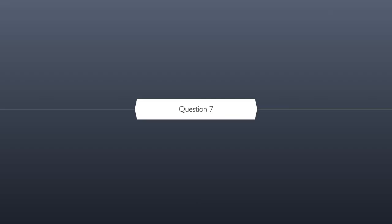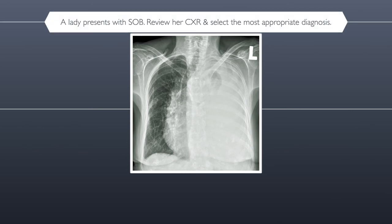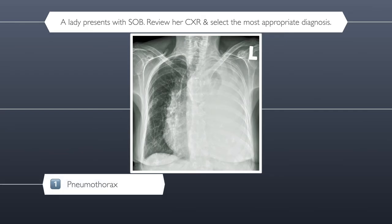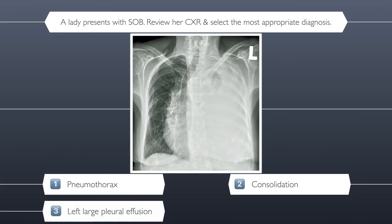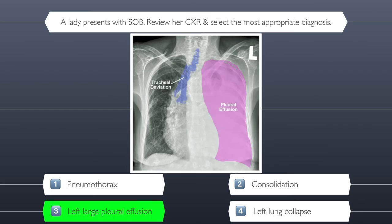Question seven. A lady presents with shortness of breath. Please review her chest x-ray and select the most appropriate diagnosis. Here are your four possible answers: is it number one pneumothorax, number two consolidation, number three left large pleural effusion, or number four left lung collapse? This is the penultimate question and the title of medical legend is within sight. The correct answer is left large pleural effusion.